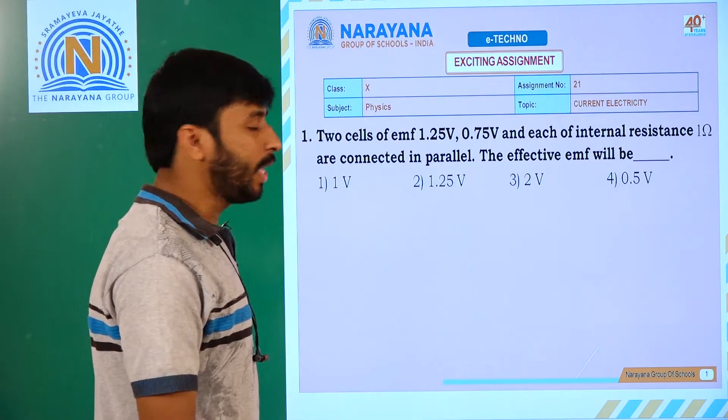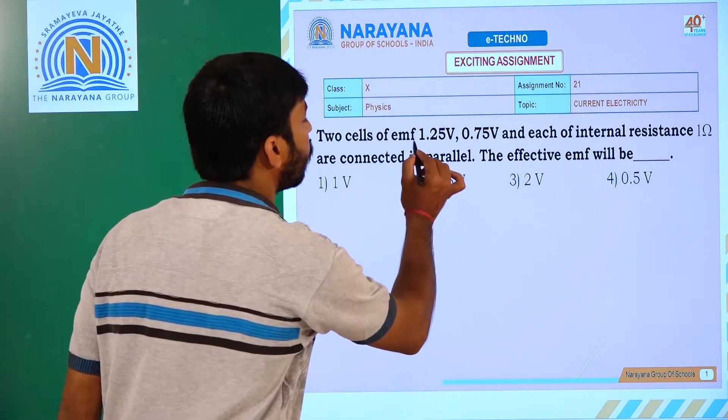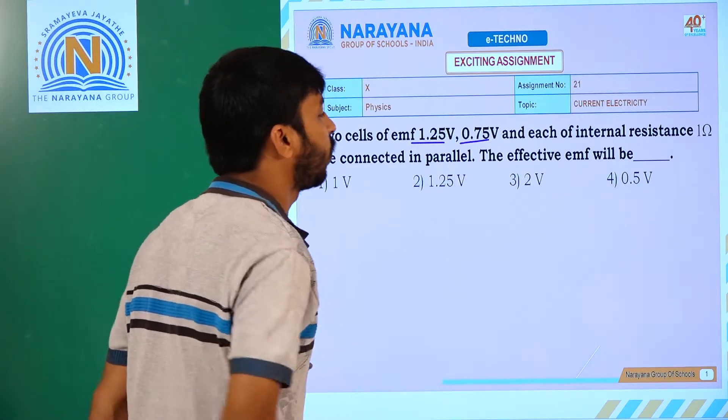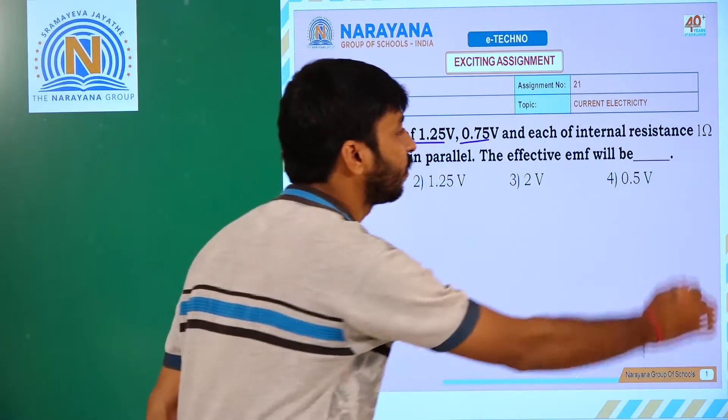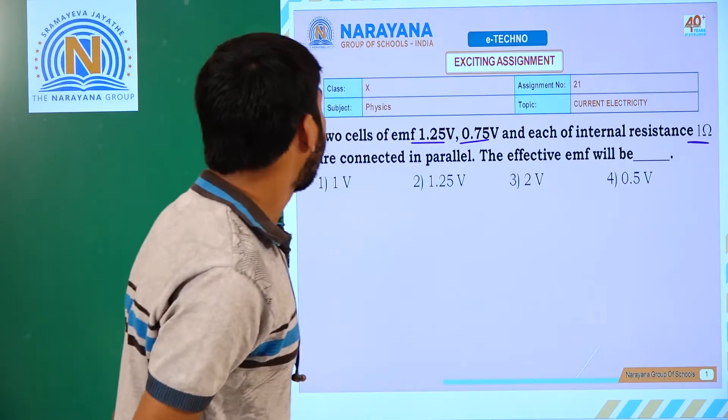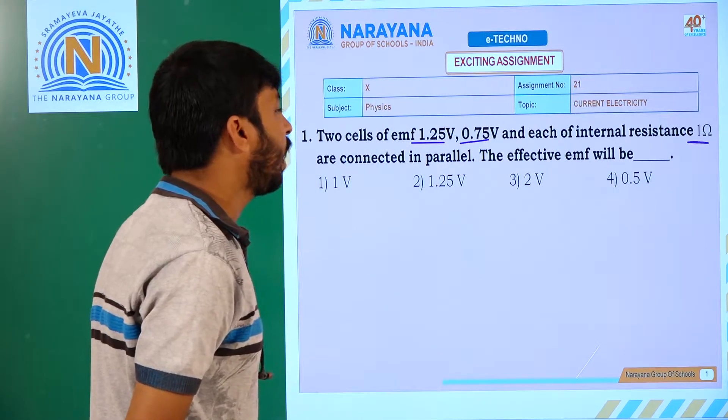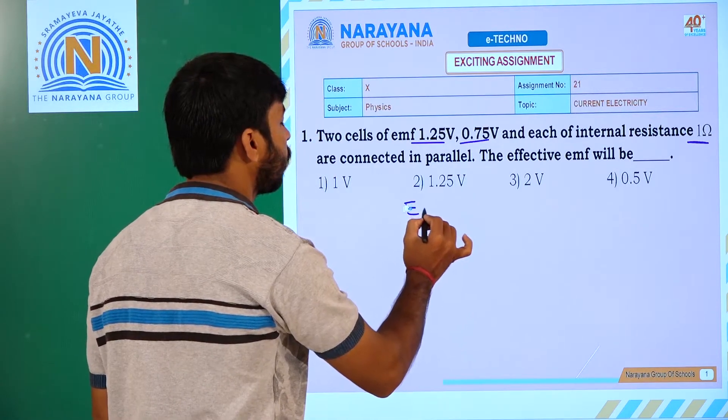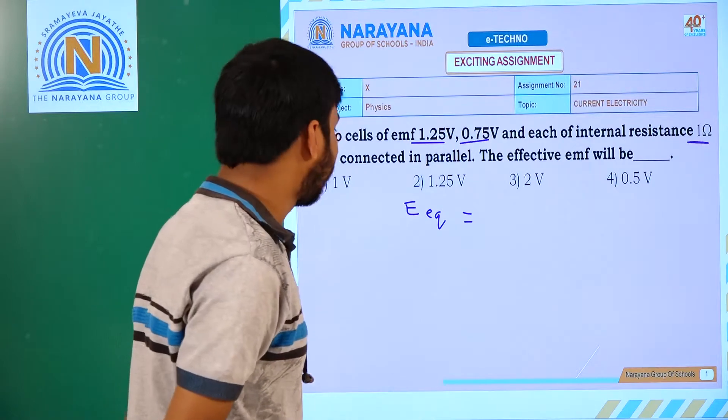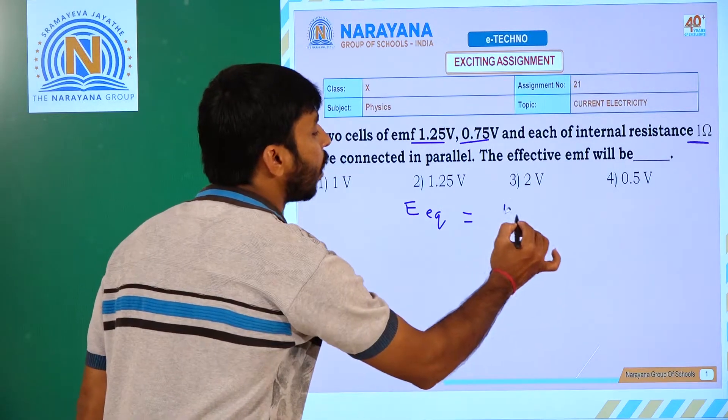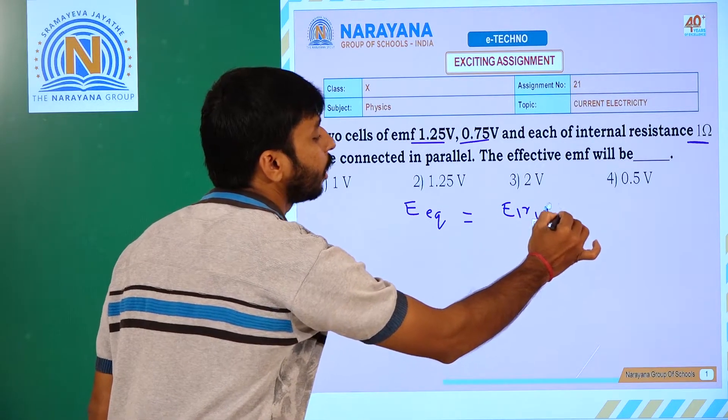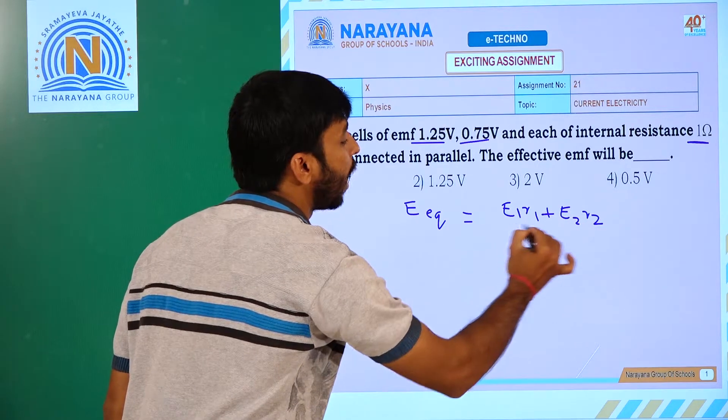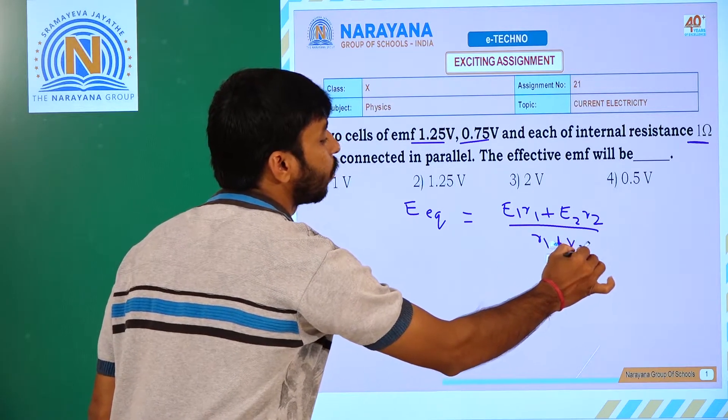The first question is: two cells of EMF 1.25 volts and 0.75 volts, each internal resistance 1 ohm, are connected in parallel. The effective EMF will be? So, E equivalent is equal to E1 R1 plus E2 R2 divided by R1 plus R2.